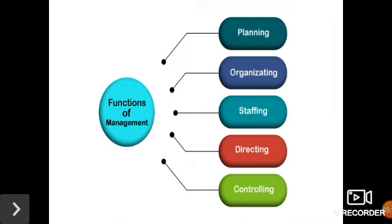The last function is controlling. Controlling deals with checking and verifying activities against predetermined standards. It is the process of ensuring that actual activities conform to planned activities. The controlling process involves establishing standards, measuring current performance, comparing performance to established standards, and taking corrective actions if deviations are detected.